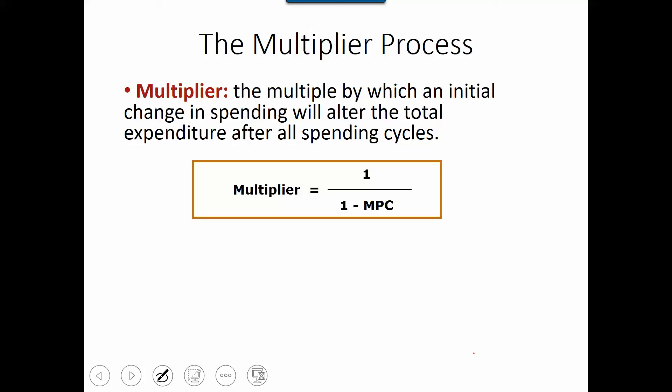So the multiplier is the multiple by which an initial change in spending will alter the total expenditure of all spending cycles. So in a previous video,